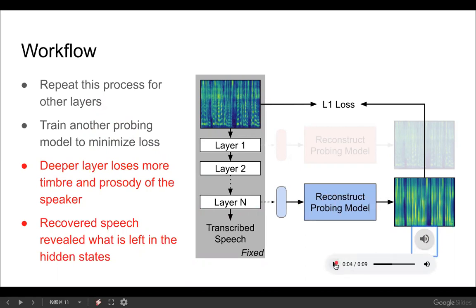We can hear that the deeper layer actually loses more timbre and prosody of the speaker, which is aligned with the literature that DNNs effectively normalize representations of different speakers. So we found that our probing model can reveal what is left in the hidden state through the recovered speech.